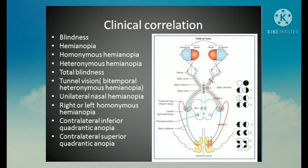Injury to the optic nerve of one side results in total blindness in the eye of that side. Damage to the central part of the optic chiasma interrupts the crossing fibers from the nasal half of both retinae and results in bitemporal heteronymous hemianopia, also called tunnel vision. Destruction of the lateral part of the optic chiasma on one side produces unilateral nasal hemianopia on the side of the lesion.